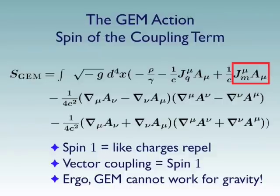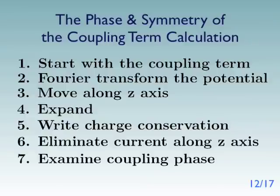Here's the logic of the criticism. For a spin 1 particle, like charges repel. And if we do a calculation that's done in Feynman's lecture on gravity, chapter 3, he shows that in the vector coupling term, that has spin 1. Therefore, this action cannot work for gravity, because like charges repel. And that is very clearly not the case for gravity. So what we're going to do, is we are going to do that calculation in detail. Now it's a little bit difficult, but this is physics, so we have to expect that.